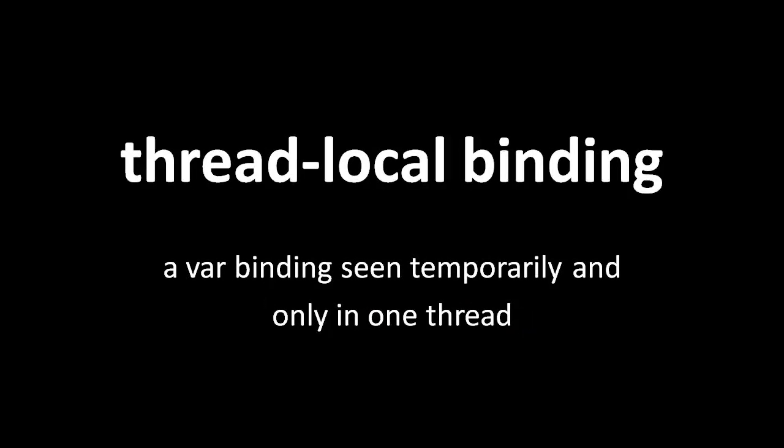Vars have a feature whereby for the temporary duration of a scope they can be given a new value. For the duration of such a scope the var has a temporary value, but then when execution leaves the scope the var has the value it had before the scope was entered. The really special part about this binding is that it is only seen in that thread. These temporary bindings are said to be thread-local, whereas the real value of the var is called its root binding. It's the root binding of a var that we set when we use def, so every thread normally sees the root binding of a var, but when a thread enters one of these special scopes it then sees its own particular binding for that var for the duration of that scope.